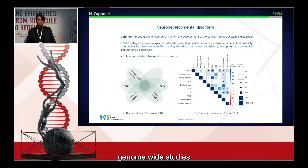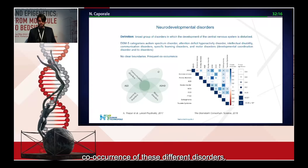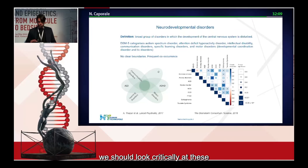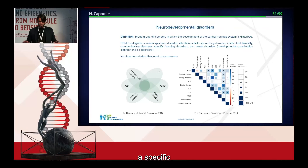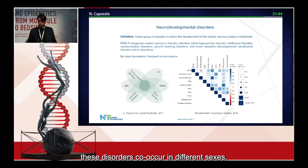Thanks to recent genome-wide studies performed at larger scales, we observed convergent genomic mechanisms that can explain the co-occurrence of these different disorders. However, as we heard yesterday, we should look critically at these correlations since they were performed without splitting analyses by sex. The general idea of finding molecular convergences is interesting, but we should investigate better how much these disorders co-occur in different sexes.